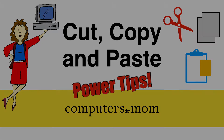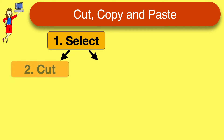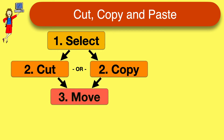Cut, copy, and paste is a group of tools that allow you to move information around on your computer in just four quick steps: select the stuff you want to organize, cut or copy the selection, move to the location where you want the stuff to go, and paste to put it there.